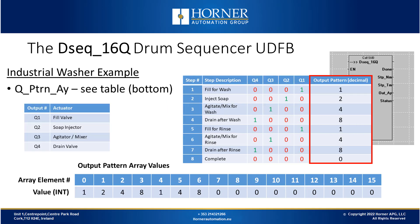Now we look at our output pattern — the most complicated part of setting up a drum sequencer. For this example we have four outputs: a fill valve, injector, mixer, and drain valve. We've drawn the output pattern in binary for each of the four outputs depending on which step we're on. For filling, only Q1 is on; for injecting soap, only Q2 is on, etc. We complete the binary pattern for all eight steps, convert each binary value to a decimal number, and place that in the output pattern array. The first element is the output pattern for the first step, continuing to the right.